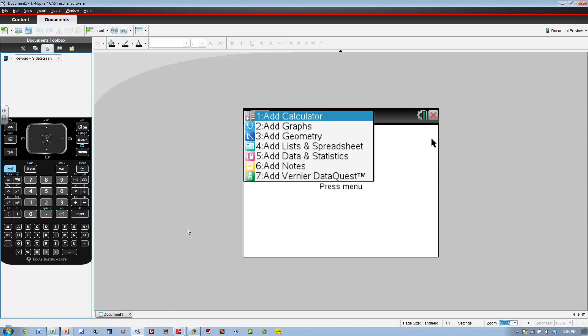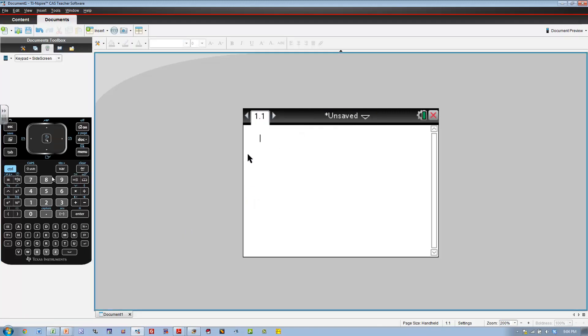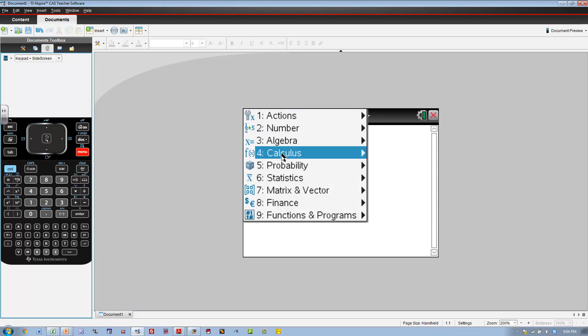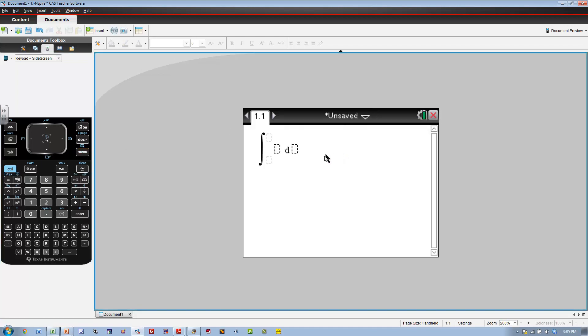So we're going to want menu, calculus, we want an integral. That integral is going to go from 0 to 3 of the square root of, and of course the x component is 3t squared minus 2t.